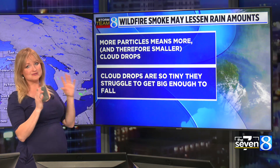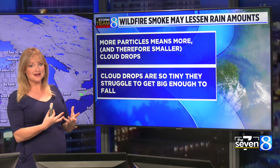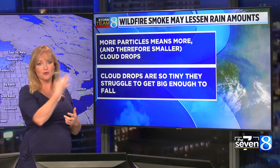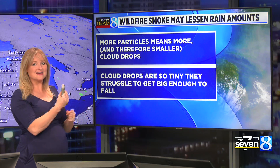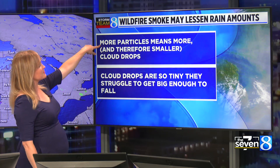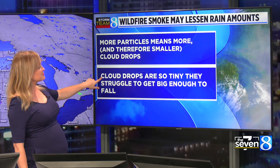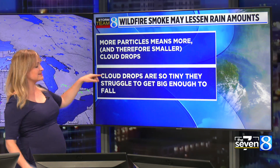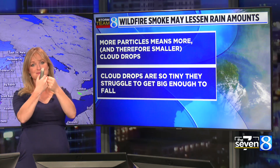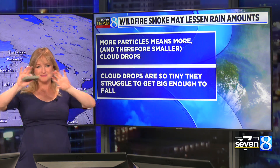So here's how it boils down. If we have more wildfire smoke moving in, it actually doesn't give us more rain or more cloud cover. Instead, it kind of breaks apart the moisture. More particles from the smoke means more and therefore smaller cloud drops. Cloud drops are so tiny in the sky that they struggle to consolidate and get big enough to fall. So when you have wildfire smoke in the area, it just makes for a cloudier day, but you see less rain actually make it to the ground.